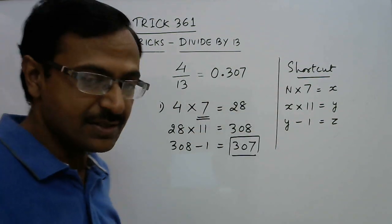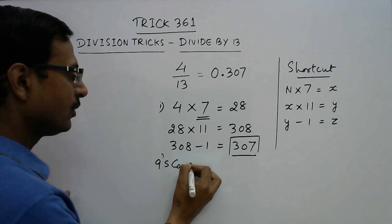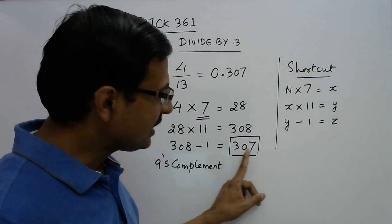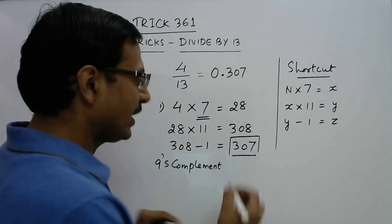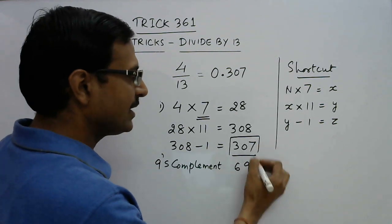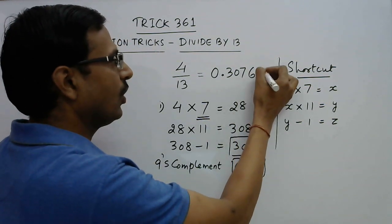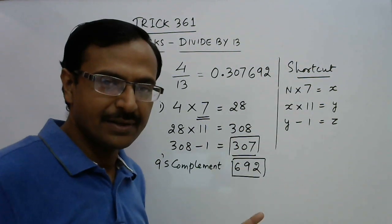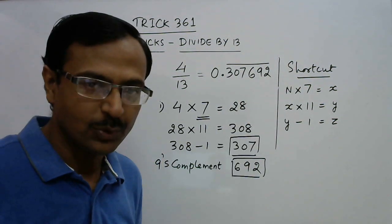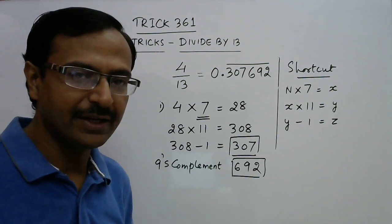Now what are the next digits? Take the 9's complement — just subtract each digit from 9. So 9 minus 3 is 6, 9 minus 0 is 9, and 9 minus 7 is 2. So 6, 9, 2 is the second part of your answer. These six digits — 3, 0, 7, 6, 9, 2 — will repeat themselves to give the decimal representation of 4 divided by 13.